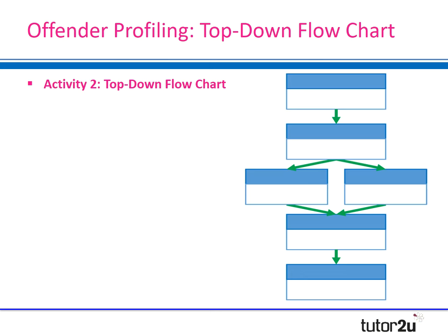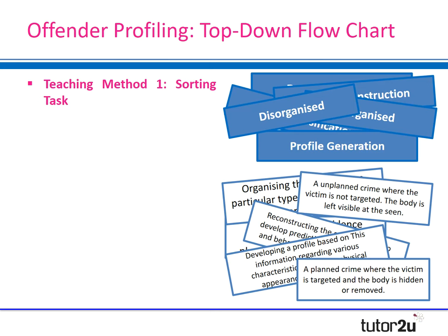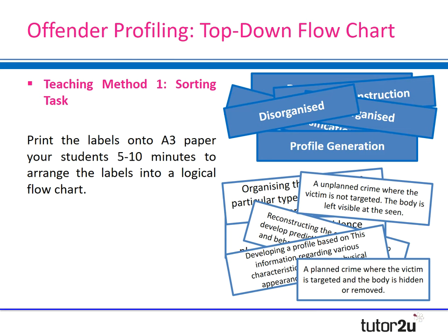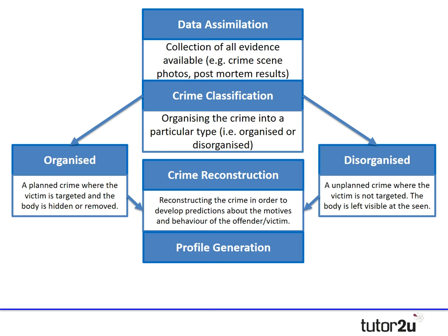The second activity is called the 'Top-Down Flowchart.' Students often benefit from producing flowcharts when remembering a series of steps or stages. This activity gets students to create a diagram of the top-down approach to offender profiling. You could do it as a sorting activity or a simpler labelling activity depending on your time. I'd suggest doing it on A3 as there's quite a lot of information, with students working in groups. I've also provided a slide where the information comes up so students can see how to construct the flowchart.